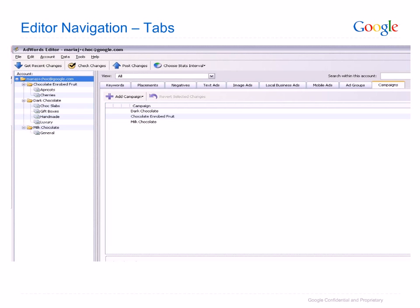When selecting the root folder of an account in tree view, the tabs highlighted here allow you to browse through each type of content in your campaign. Currently, the Campaigns tab is selected and so campaign names are listed. If you were to select the Ad Group tab, you would see a list of all ad groups in the account. This is the same for all the tabs — keywords, etc.